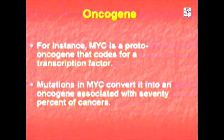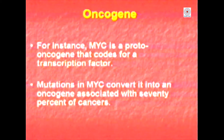For instance, MYC which is a proto-oncogene — every time a cell goes through a cell cycle and gets stimulated for division, MYC is activated. This codes for a transcription factor. Now if there are mutations in MYC which convert it to an oncogene, this will become a cancer-producing event. In a large number of cancers — in fact 70% of cancers — are associated with MYC alteration in some way or other. MYC is a nuclear effector.